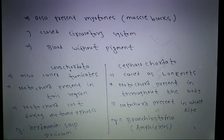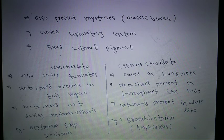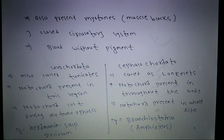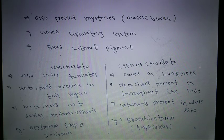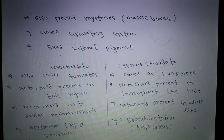Comparing the two subphylums: Urochordata is also called tunicates; Cephalochordata is also called lancelets. In Urochordata, the notochord is present only in the tail region, while in Cephalochordata it is present throughout the entire body. The examples of Urochordata are Herdmania, Salpa, and Doliolum; the example of Cephalochordata is Branchiostoma and amphioxus. We will see the subphylum Vertebrata in the next lecture.